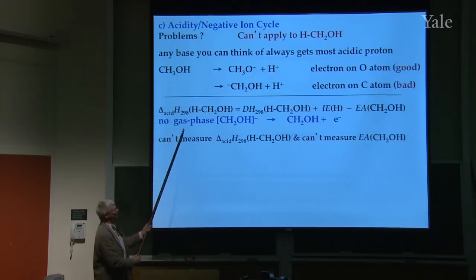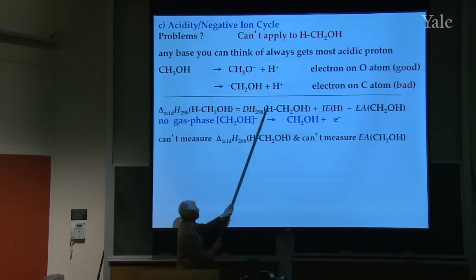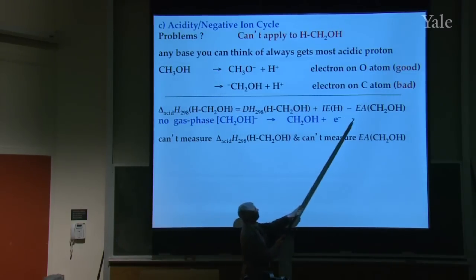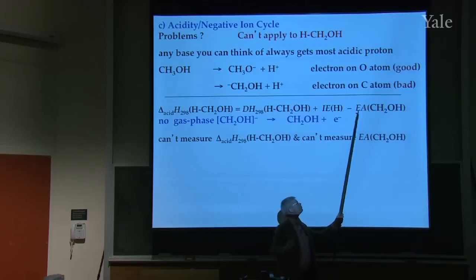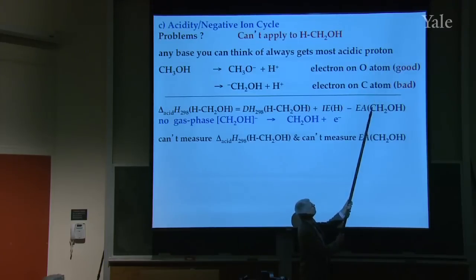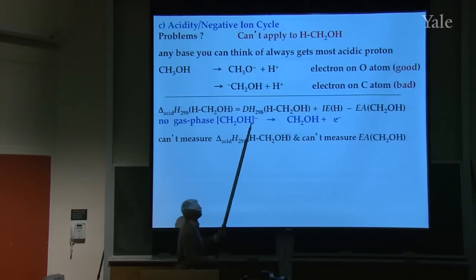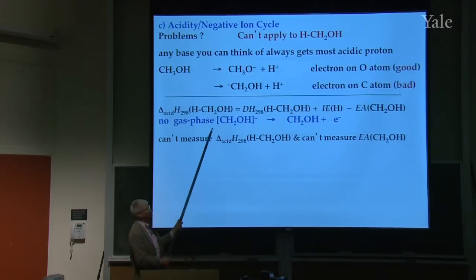So negative ions are not going to be a useful way to measure the CH bond. If you were going to apply the negative ion cycle, you'd have to measure the acidity of this proton, then measure the electron affinity of this radical. This radical — hydroxymethyl radical — is different than methoxy, because the dot sits on the carbon, not on the oxygen. So it's a different radical. If you can't make the ion, you can't do the measurements.